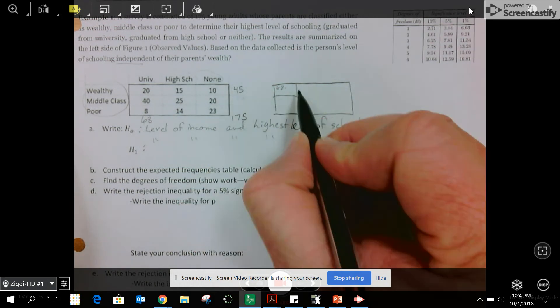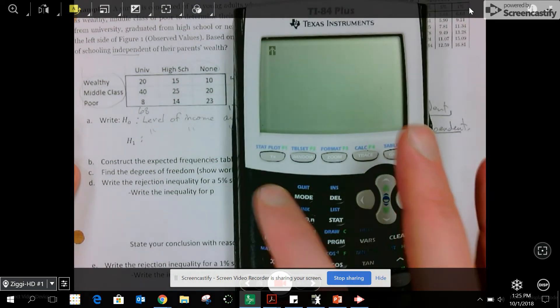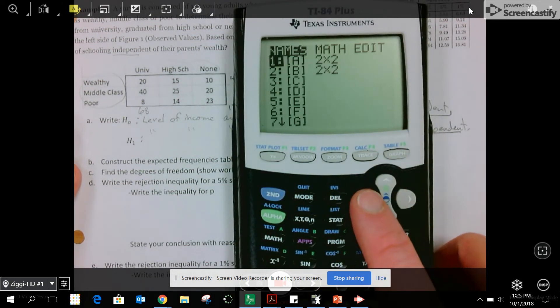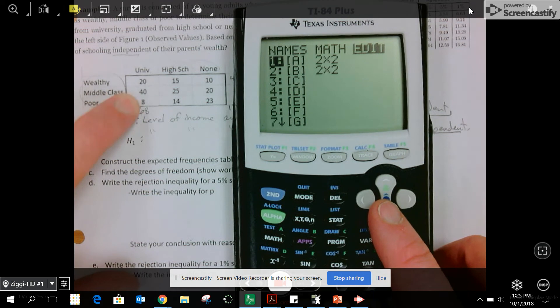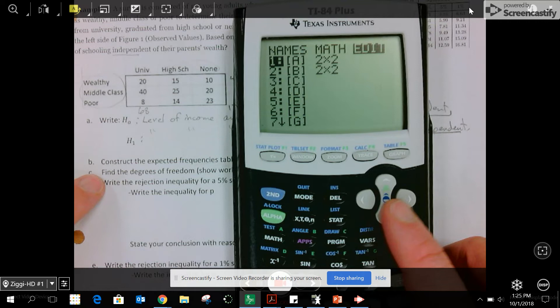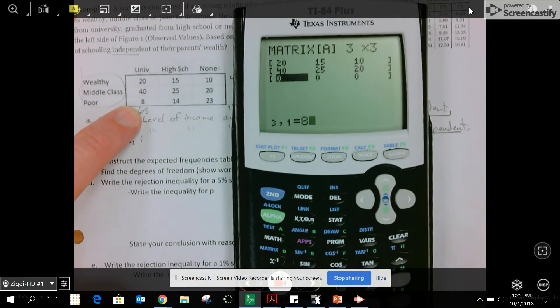I'm going to use a calculator, so go to matrix. This is a three row, three column, so it's a three by three. I'm going to put the numbers in. I'm not putting the totals in, and then I'm going to run my chi-squared test.